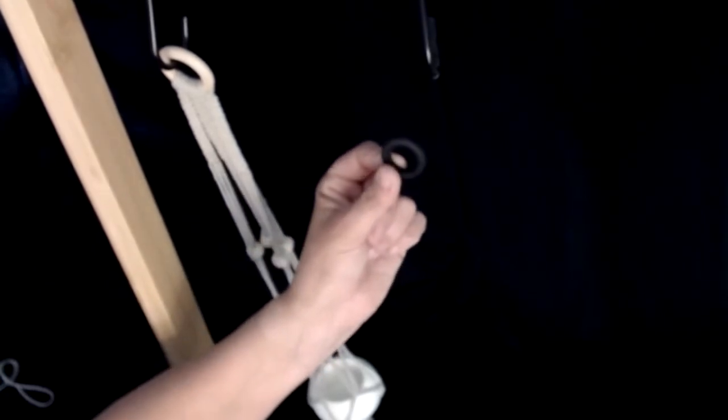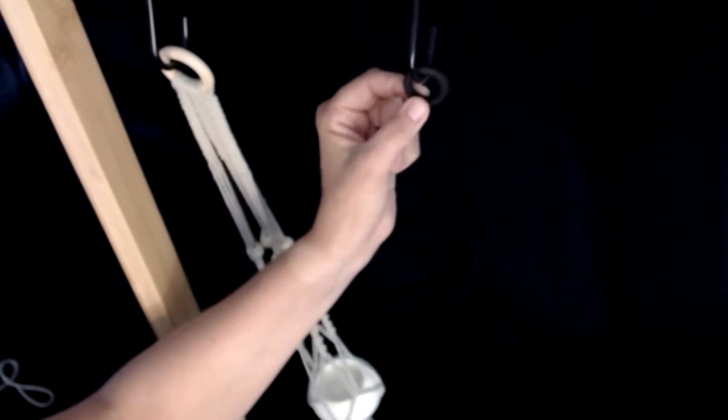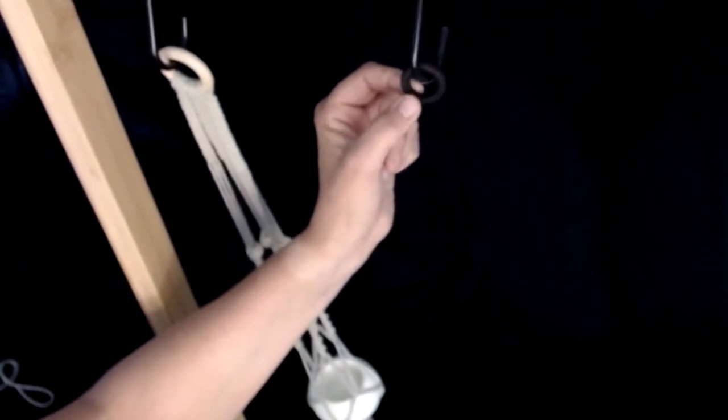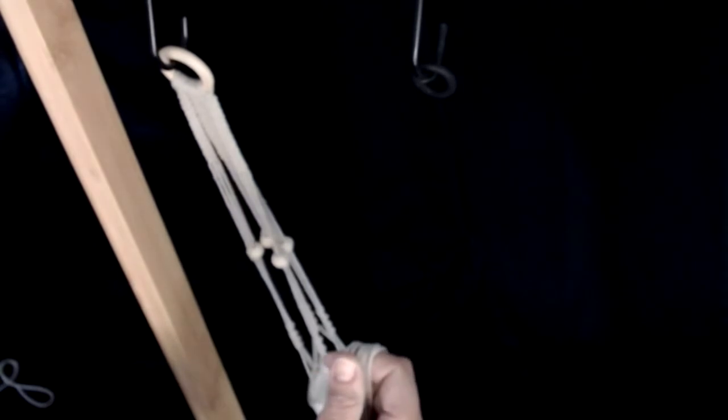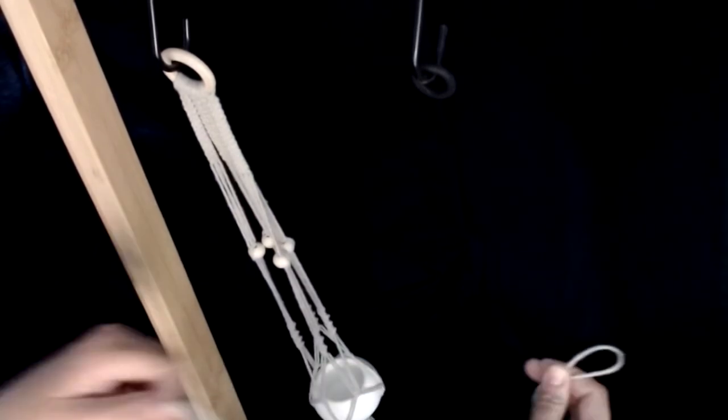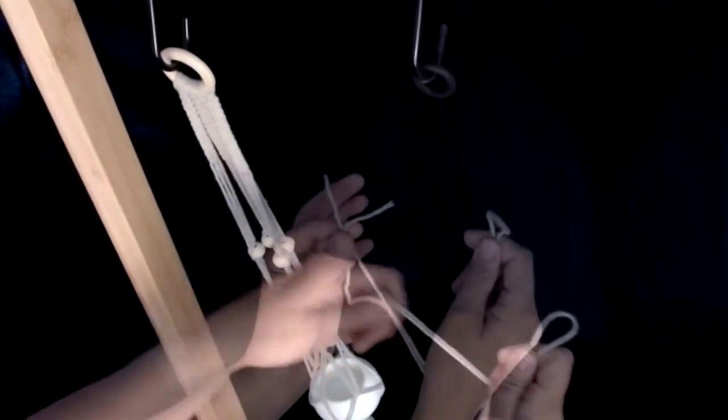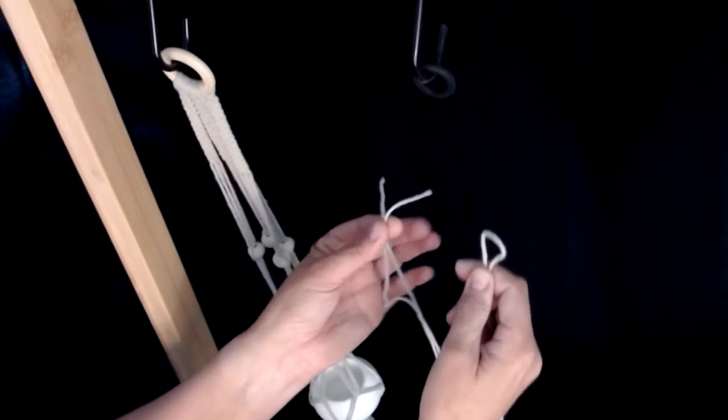We're going to start with putting our painted ring on our hook. Mine's not very visible because it's black and I've got the black background. I've also pre-cut eight lengths of three meters. Grab one length and fold it in half. So one side is going to have a loop and the other side is going to have the two lengths.